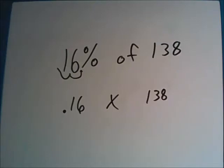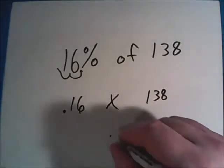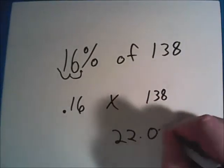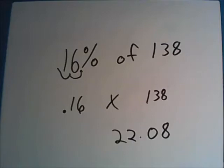Now we take that and multiply it times the number we're trying to find as a percentage of, so in this case 138. Now when we take .16 and multiply it times 138, the answer should be 22.08. So 16% of 138 is 22.08.